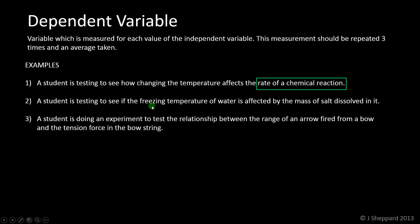Example two: a student is testing to see if the freezing temperature of water is affected by the mass of salt dissolved in it. Again, clearly, you are going to be changing the mass of salt, so the dependent variable is going to be the other one, the freezing temperature of the water.